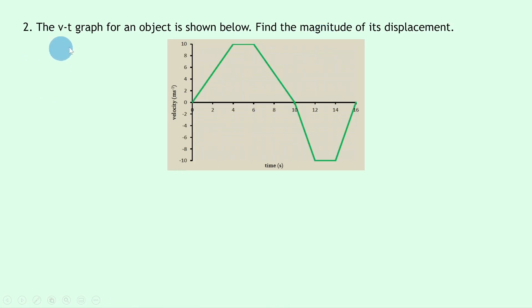Now question two says: the velocity-time graph for an object is shown below — find the magnitude of its displacement. Again, we just want to find distance, i.e. the size of the displacement with no direction.